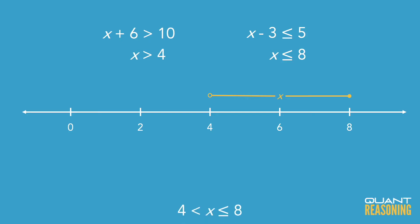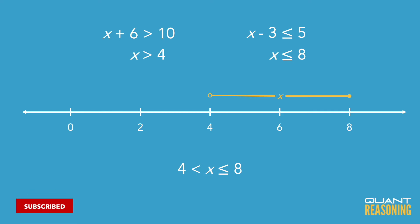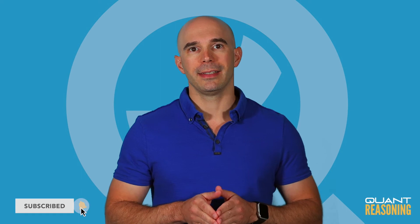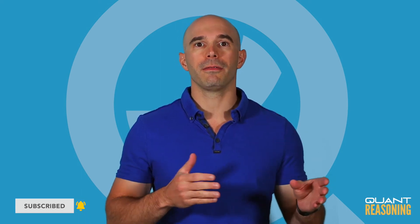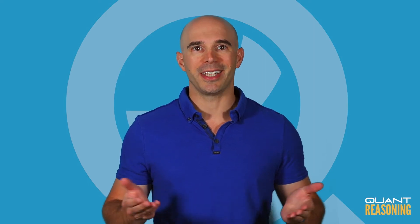x has to be somewhere to the right of 4 — we know that from the first inequality. But it can't be any further to the right of 8, so it's limited at 8. That means that x is greater than 4 but less than or equal to 8. And that's the answer.